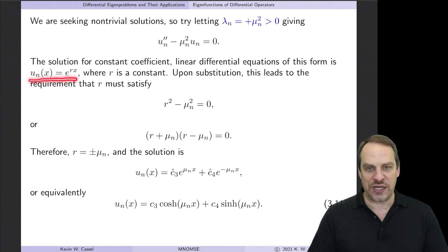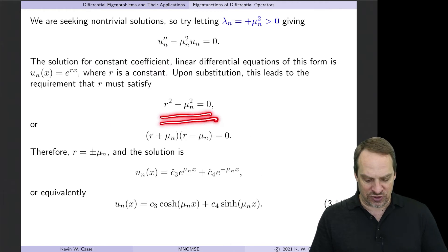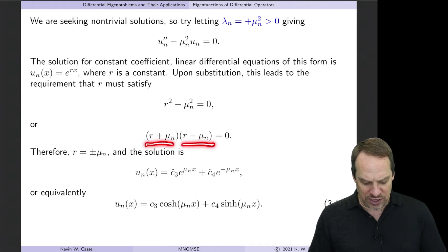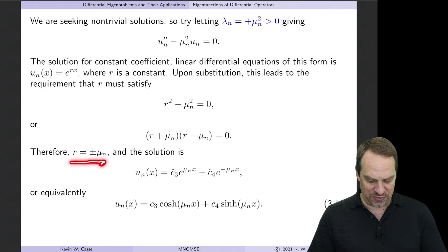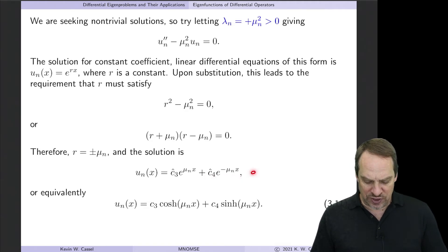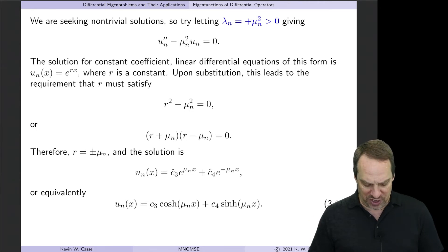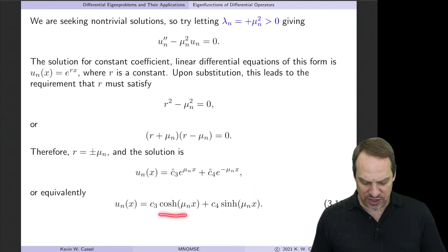The general solution is e to the rx. We substitute that into our differential equation and get the algebraic equation r squared plus mu squared equals zero. We factor that and get the two values of r are plus and minus mu_n. So the general solution u_n of x is a constant times e to the mu_n·x plus another constant times e to the minus mu_n·x. For a finite domain, we prefer to use the equivalent trigonometric form — in this case, cosh and sinh. There are no i's in the exponentials, so it's cosh and sinh of mu_n·x.